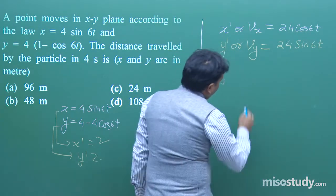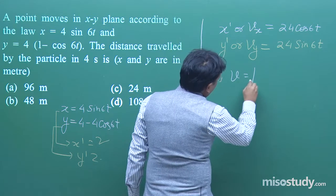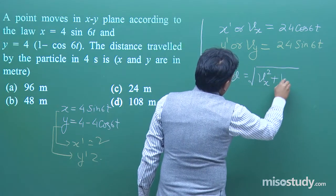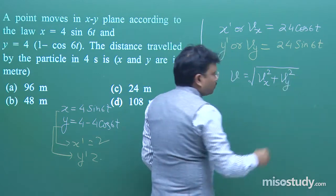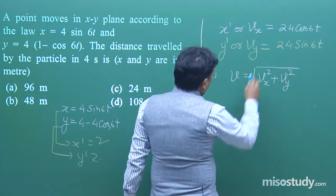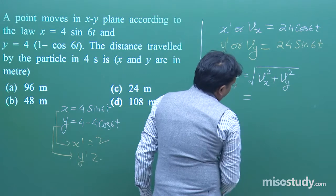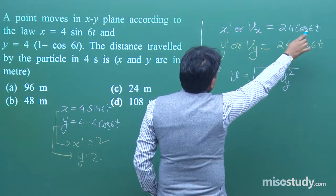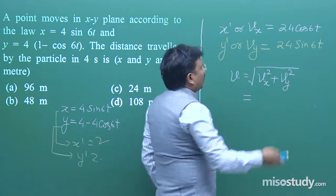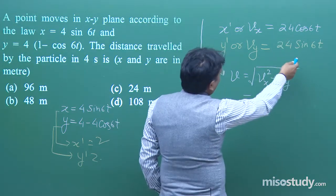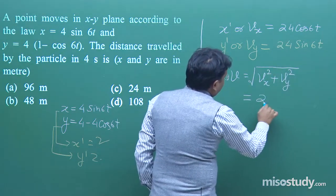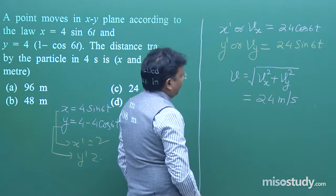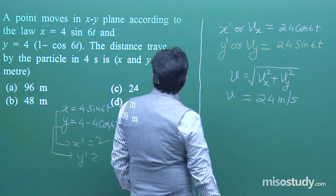From here we can find the total velocity: v = √(vx² + vy²). Putting the values, sin²(6t) + cos²(6t) = 1, and taking 24² common, ultimately v = 24 m/s.